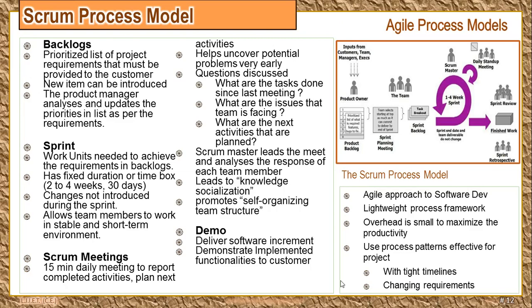The Scrum process model has certain features. Whatever development takes place, it will take place in the form of packets. Testing and documentation will go on in parallel along with the construction. The Scrum model has something called sprints, which are time durations during which work is done from the backlog. The backlog is nothing but the existing requirements. There are regular short daily meetings, and demos are delivered to the customer in a time-boxed manner.